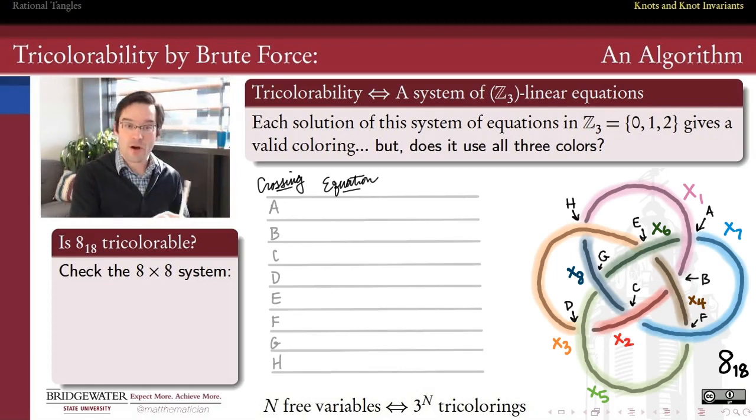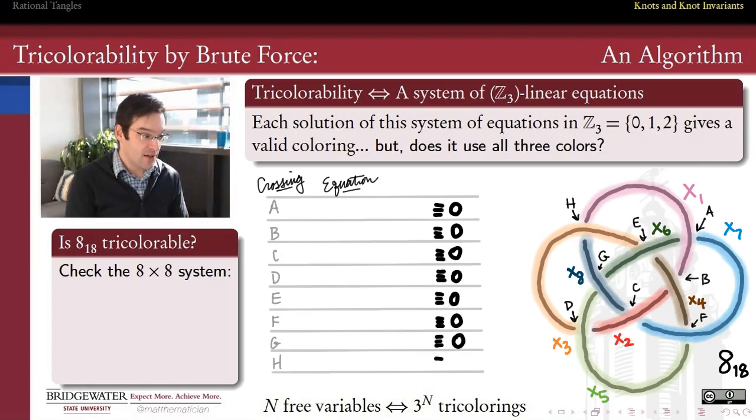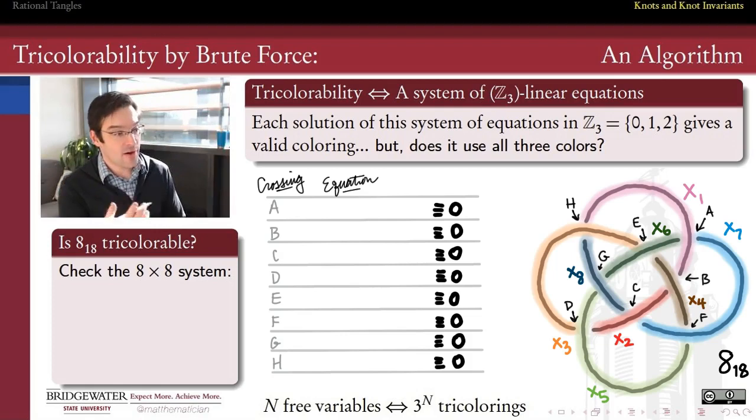All we have to do is go one crossing at a time and write out the magic equation that has to be satisfied at that crossing in order for that crossing to meet our tricolorability condition. At crossing A, B, C, D, E, F, G, and H, the magic equation, the right-hand side, is all going to be 0. Remember, the magic equation is x plus y plus z is congruent to 0 mod 3. And so all we have to do at each of the crossings is figure out which are the three arcs that are incident at that crossing.